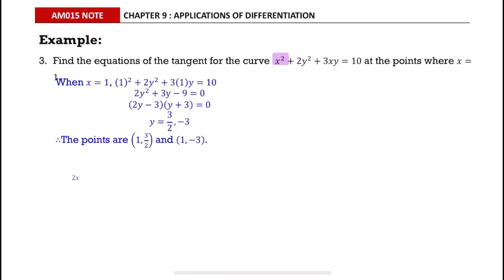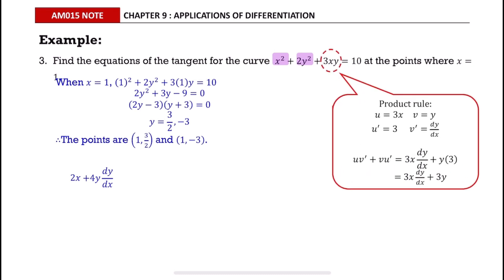Differentiating 2y squared gives 4y dy/dx, and for 3xy we use the product rule. The last term is to differentiate 10, which equals 0. Now we can factorize the dy/dx and then solve.